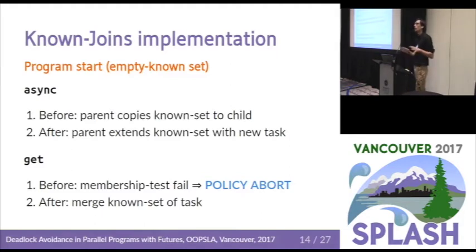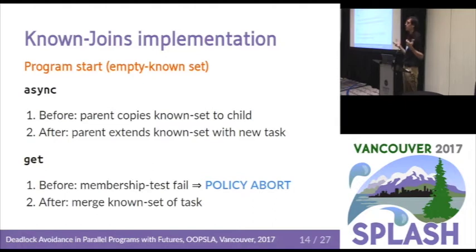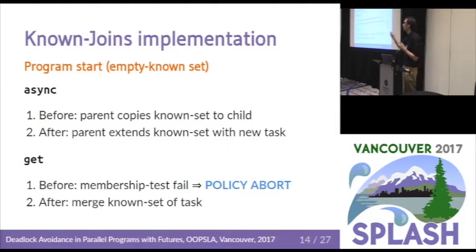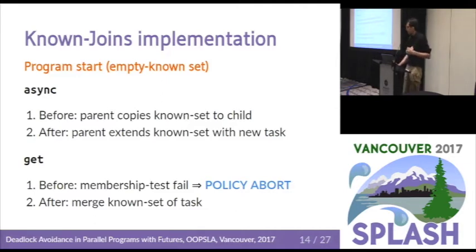Here is an overview of how the verification algorithm works. Essentially we monitor get and async, and we maintain some verification state — the set of tasks that the current task is able to wait for, called the known tasks. The only way to extend this set is either by creating a task, in which case you add that name to your set, or when you're waiting for termination of a task, you inherit the knowledge of the task you waited for. Before you do a get, you check that the task is known — that is, it's in the set. Remember: don't wait for strangers.